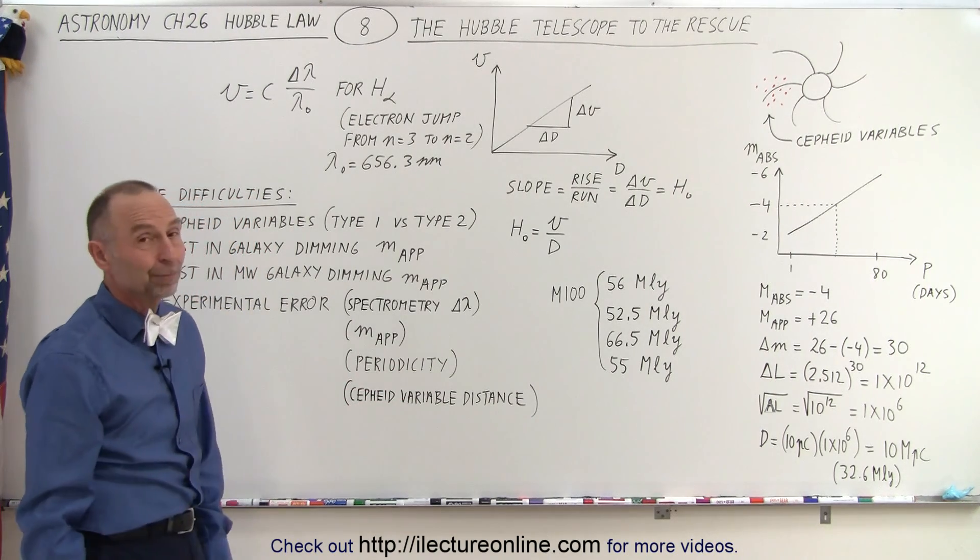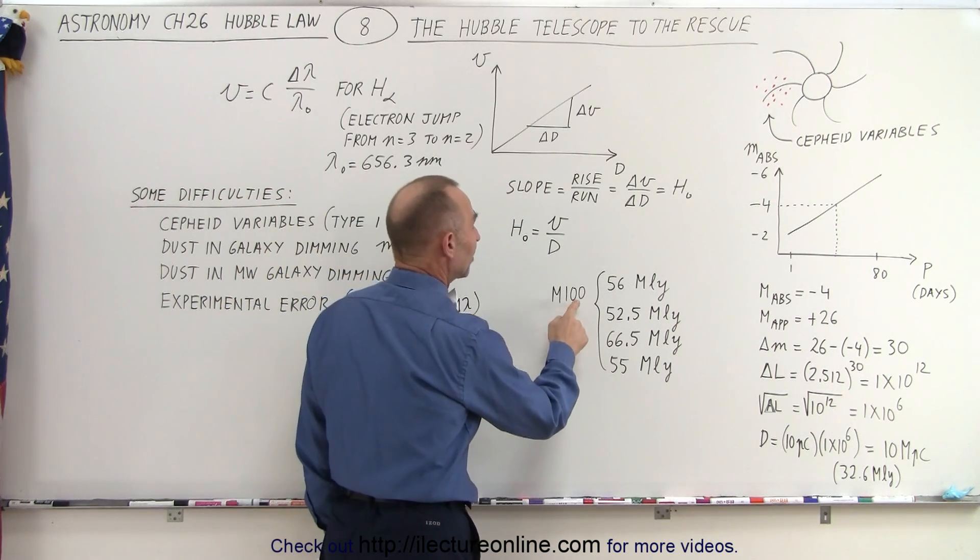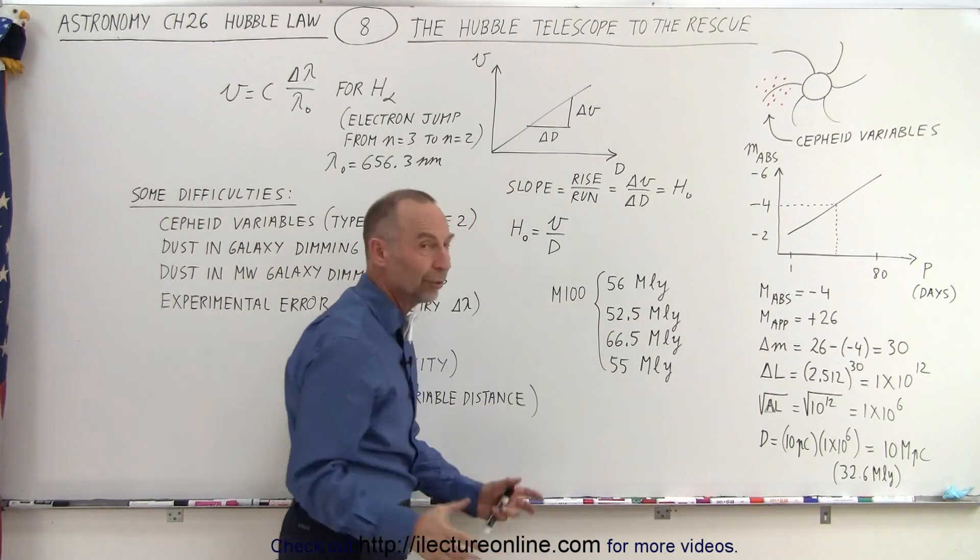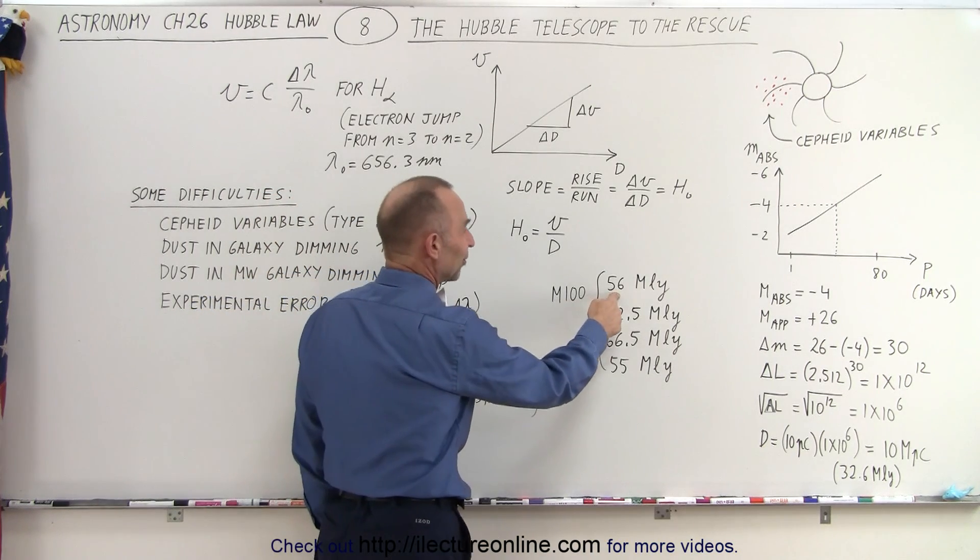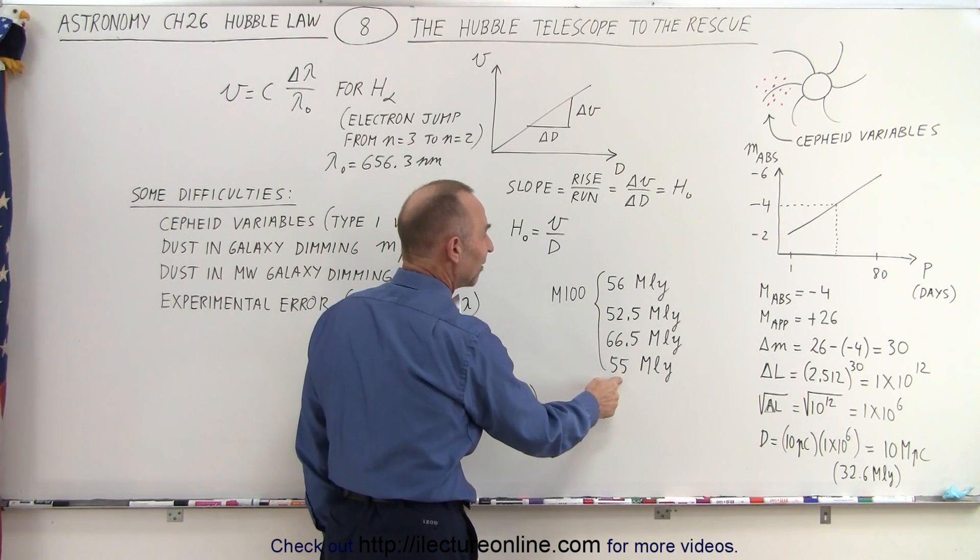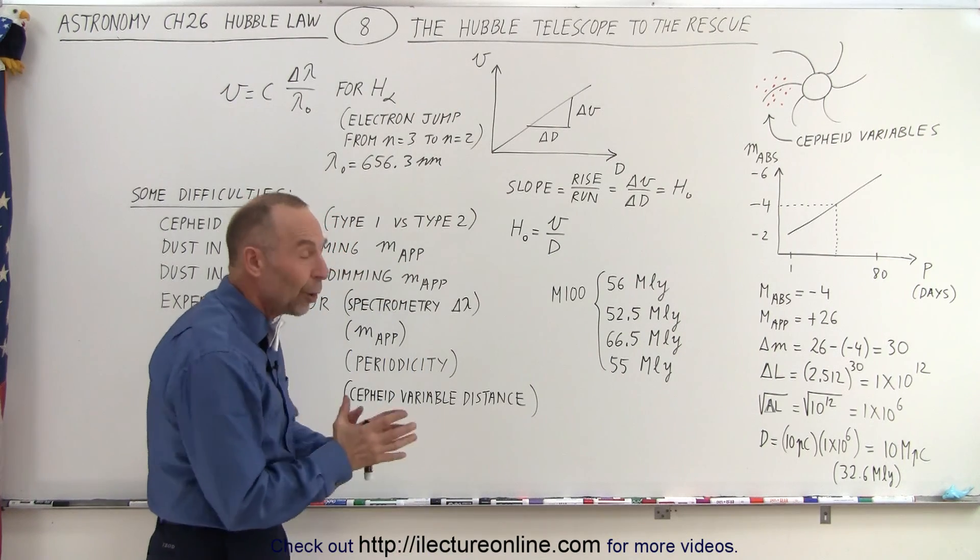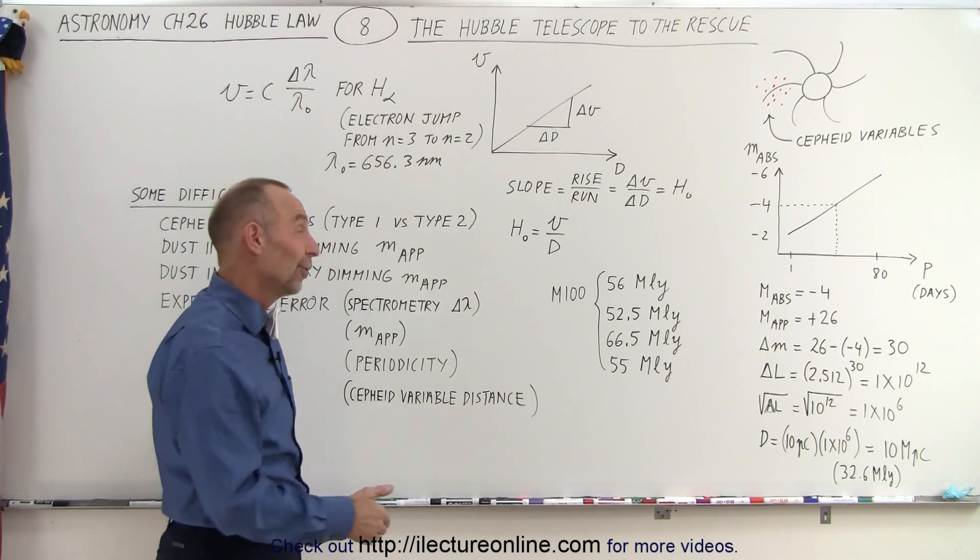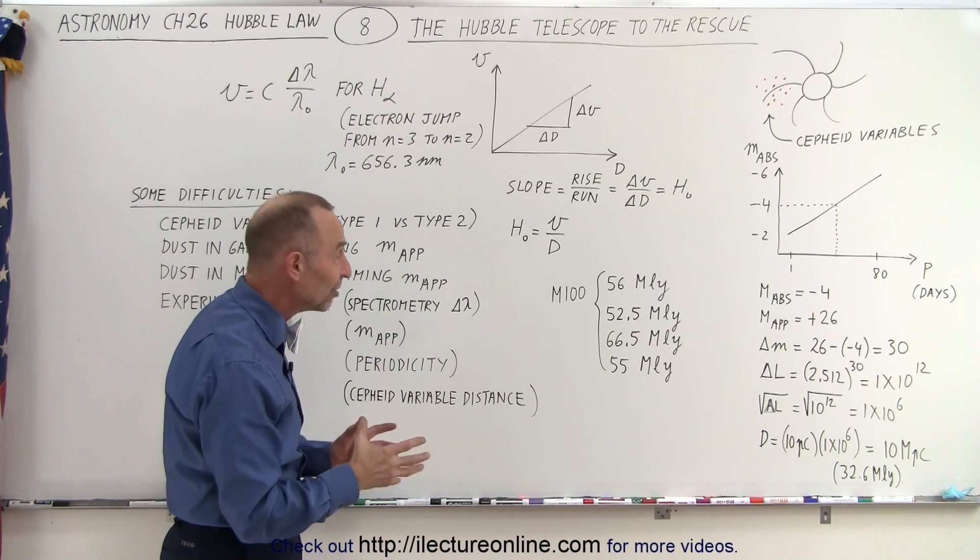To give you an example, we have on four different occasions tried to measure the distance to M100, that beautiful spiral galaxy. Notice the measurements: 56 million light years, 52 and a half, 66 and a half, back to 55. None of them were the same twice. In other words, we always get a different value and some of the values vary quite a bit. So you can see that there's a lot of variation.